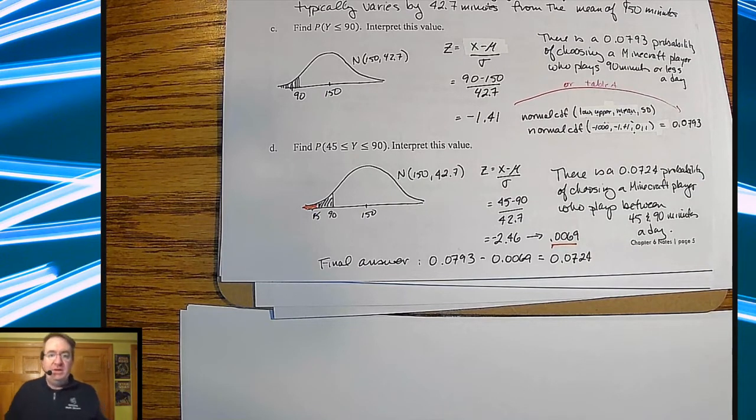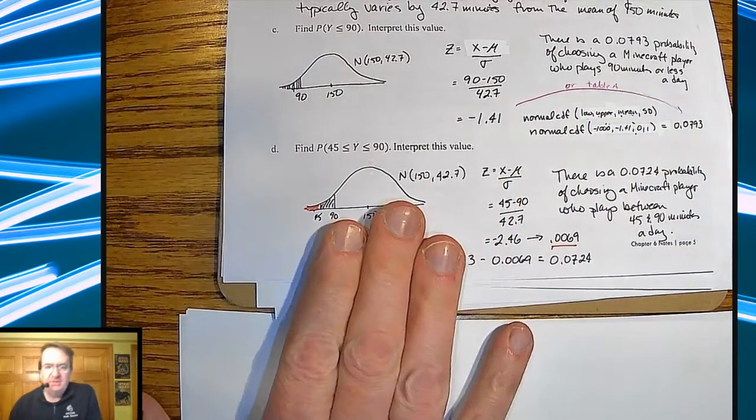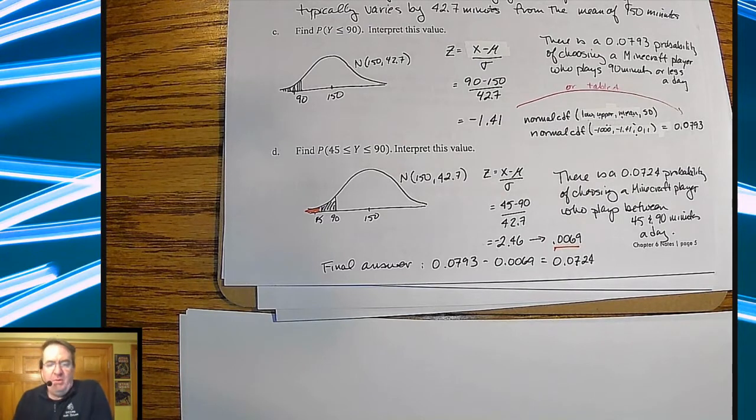We'll continue on with some of these ideas in terms of random and discrete probabilities. But again, our friend the Z score has pretty much come back to stay. So anyway, I hope everything's going well. If you have any questions, drop me a line below. If anything's not working, same thing. Talk to you soon.